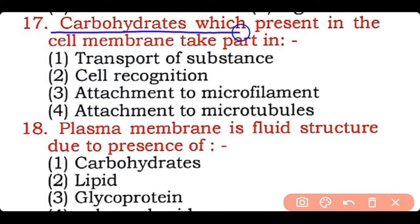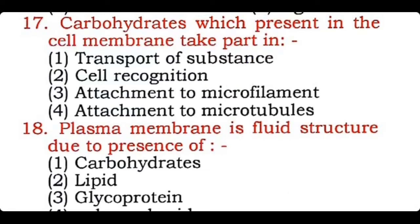Question 17: Carbohydrates present in the cell membrane take part in — transport of substances, cell recognition, attachment to microfilaments, or attachment to microtubules? Correct answer is option two — carbohydrates are present in the cell membrane in the form of glycoprotein and they help in cell recognition.